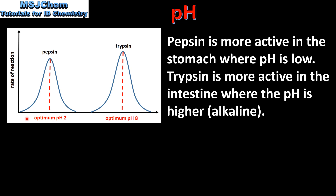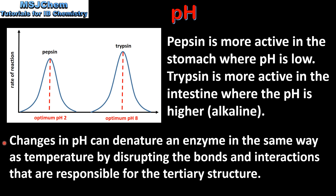Here we can see the optimum pH for two enzymes, pepsin and trypsin. Pepsin is more active in the stomach where pH is low. Trypsin is more active in the intestine where the pH is higher. Changes in pH can denature an enzyme in the same way as temperature, by disrupting the bonds and interactions that are responsible for the tertiary structure.